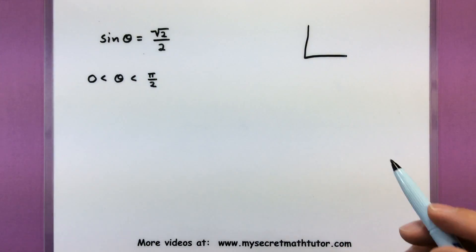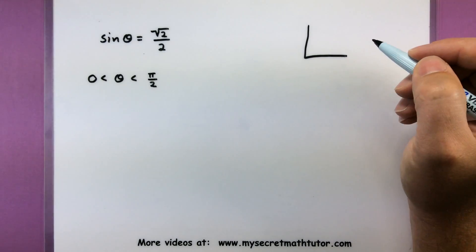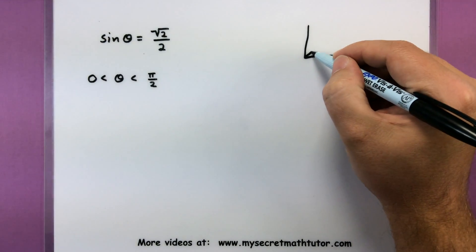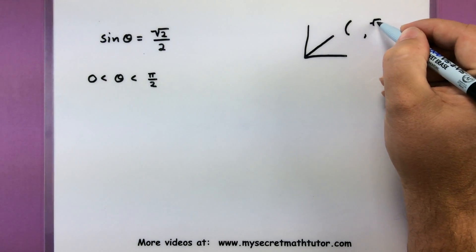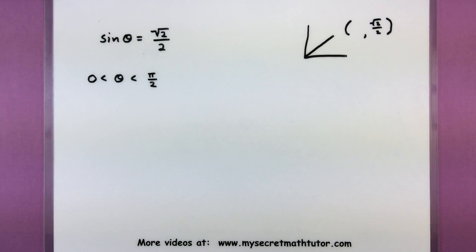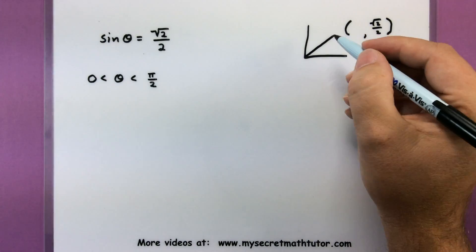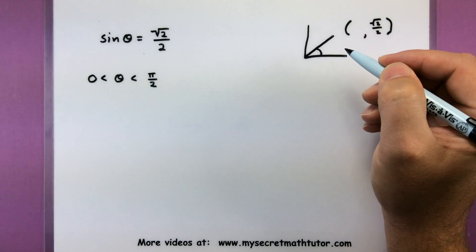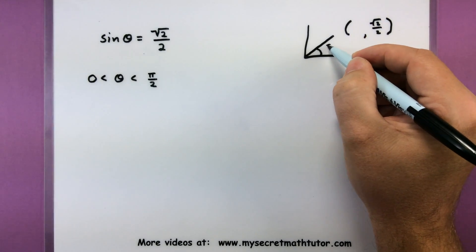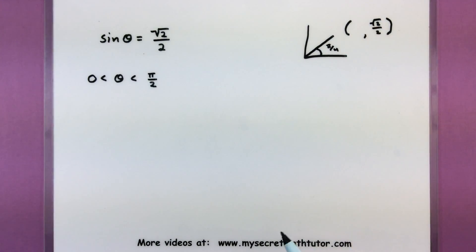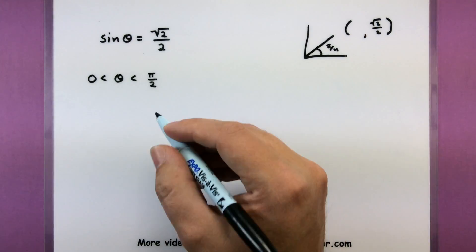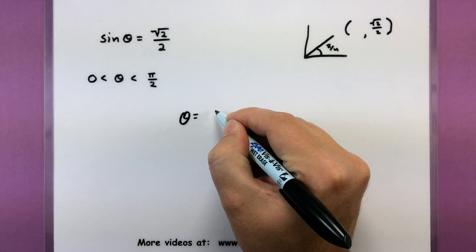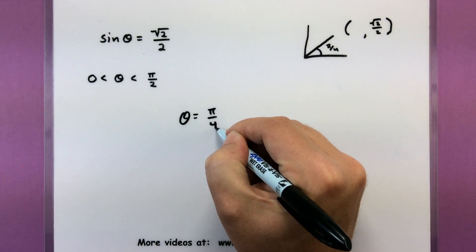For sine I'm thinking of my unit circle and thinking where the second coordinate is equal to square root of 2 over 2. So in my head I'm thinking of a picture like this. Second coordinate square root of 2 over 2. And once I have that information I can look it up and say oh yeah I remember this angle. It's actually just π over 4. That's the only one in the first quadrant whose second coordinate is the square root of 2 over 2. So θ equals π over 4. Not bad.